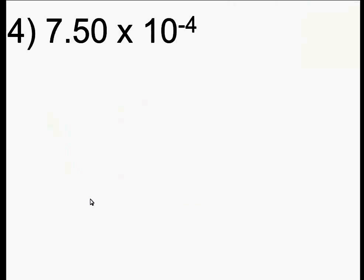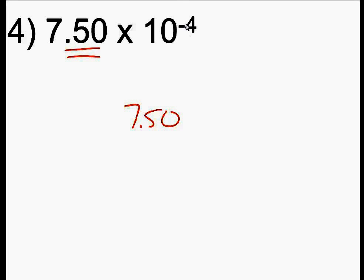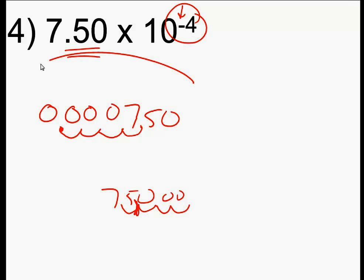Let's convert from scientific notation into a whole number. I tend to just rewrite the decimal part first. I have a negative exponent — a negative exponent means a small number — so I need to make this a small number, and I do that by moving the decimal point four places: 1, 2, 3, 4. My answer is going to be 0.000750. For those who thought about moving it the other way — 7.50 moved four places to the right would be 75,000, a very large number. My negative exponent means a very small number, so 0.000750 is correct.